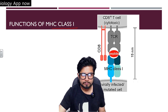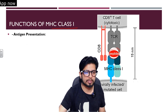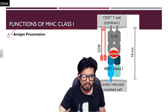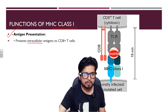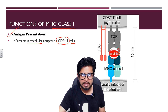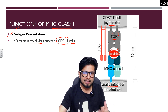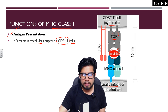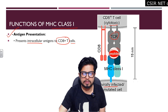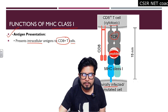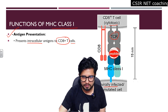The primary function of MHC class 1 is antigen presentation — it presents intracellular antigens to CD8+ T cells. CD8+ T cells, also known as cytotoxic T cells, have T cell receptors (TCR). A virus-infected cell, mutated cell, or cell undergoing tumorigenic changes takes a fragment of its peptide and showcases it to CD8+ T cells.